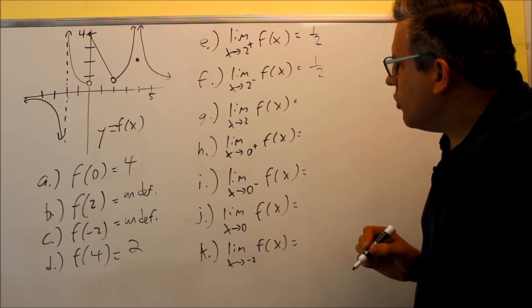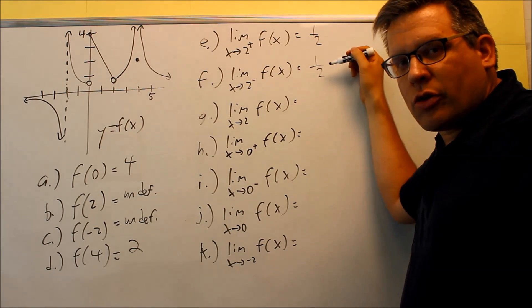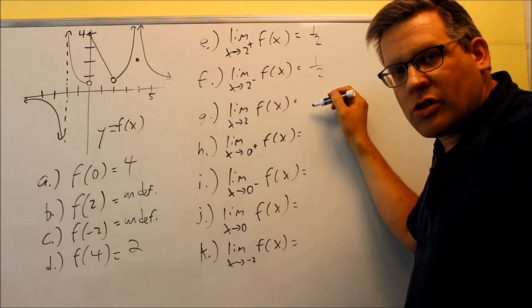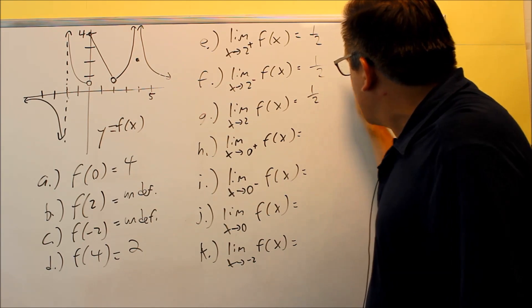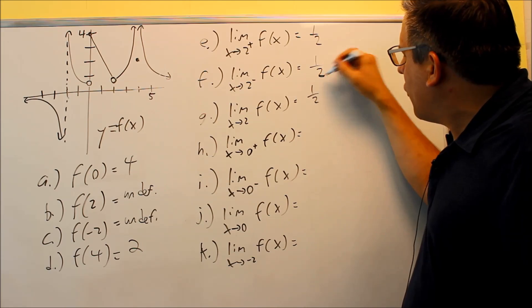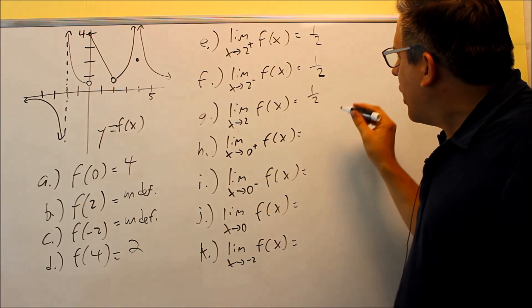The limit as you approach two - these two limits, if they equal each other, that means this limit is also going to exist. The left and right hand limit must be the same and they're going to approach the same value as the two other ones here - one half.